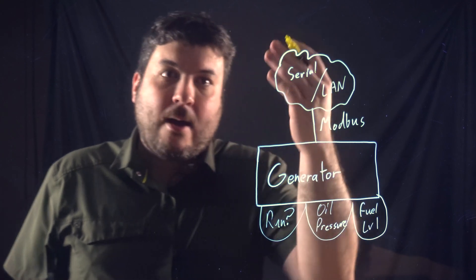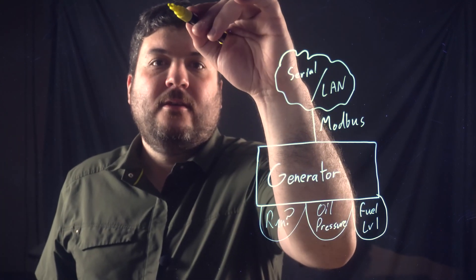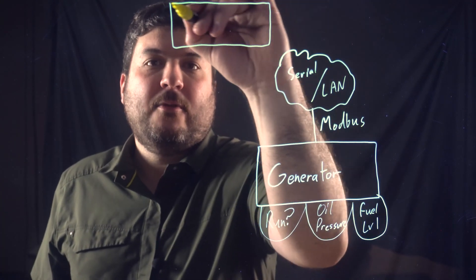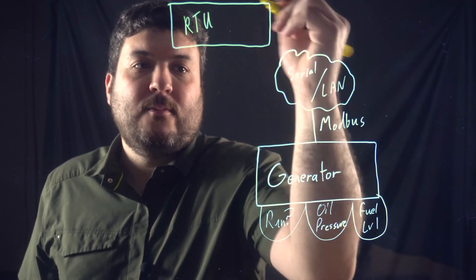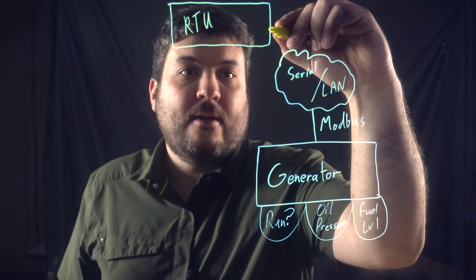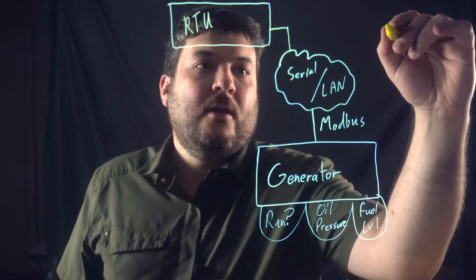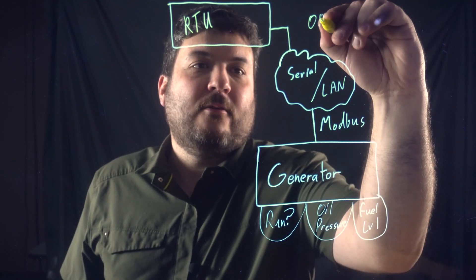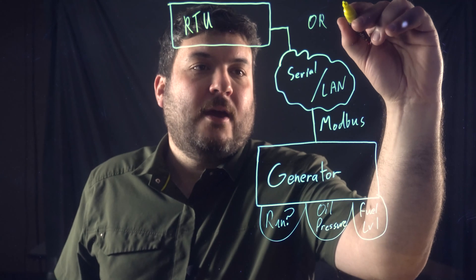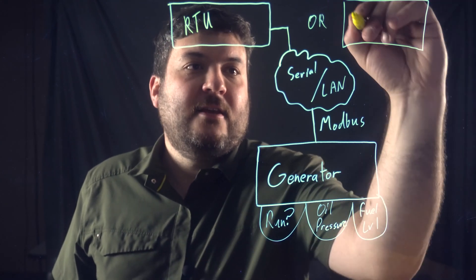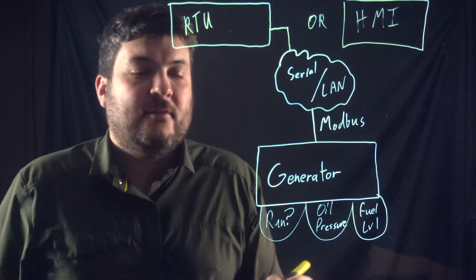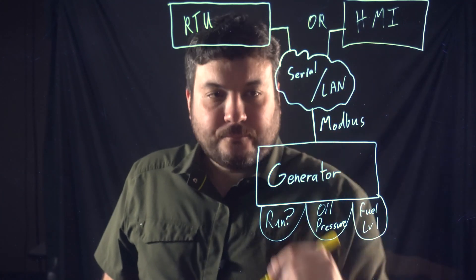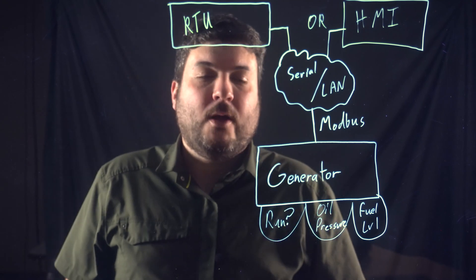And then you're going to have some top-level device. And this is, well, there's a couple things it could be. It could be an RTU, like a DPSNet Guardian is one example. And that would commonly be connected via serial. You could also, and I guess I'll write an OR here, you can also have just any SCADA HMI, and that's usually going to happen over LAN if it's talking directly. That one could be polling the generator as well.